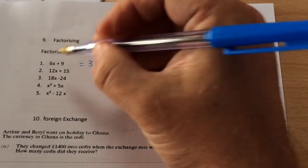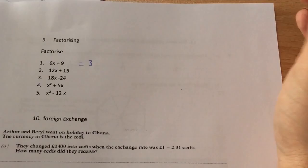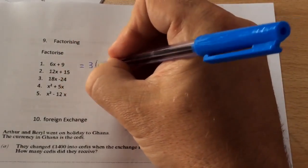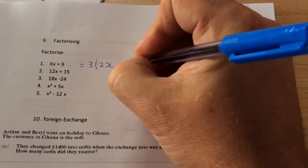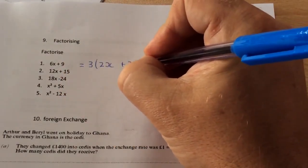So when I'm putting 3, I'm dividing both of them terms by 3. So I ask myself, how many 3's in 6x? And the answer is 2x. Then how many 3's in 9? 3.